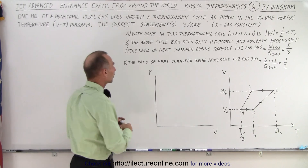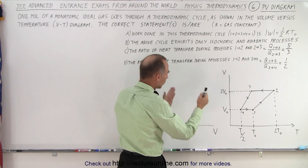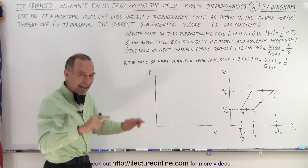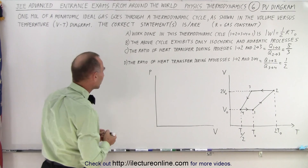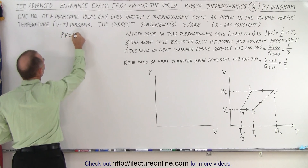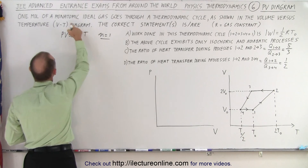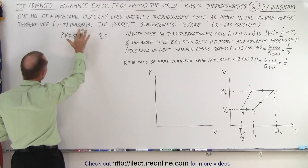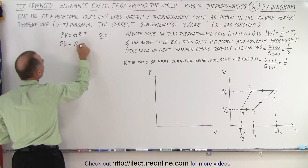Since they want us to figure out the work done in the cycle, I suggest we change it from a VT to a PV diagram, because on a PV diagram when we have a cycle, the work done is the area inscribed by the cycle. We start with the PV = NRT equation. Here N = 1, because we're dealing with one mole of gas, so that becomes PV = RT.